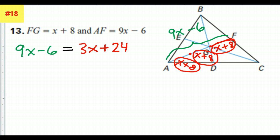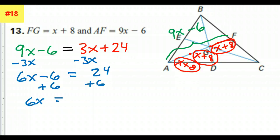Solving it is the easy part. Let's subtract 3x from both sides. That's going to give me 6x minus 6 equals 24. Add 6 to both sides. That's going to give me 6x equals 30. Divide both sides by 6. That's going to give me x equals 5.